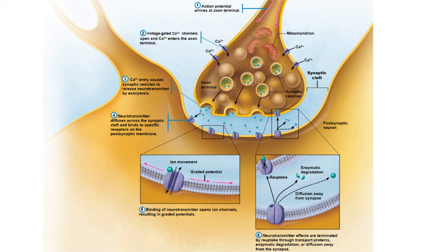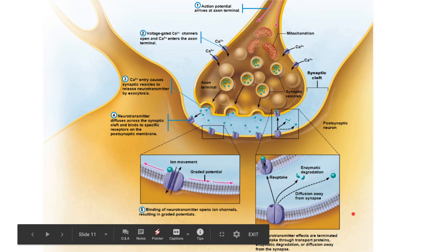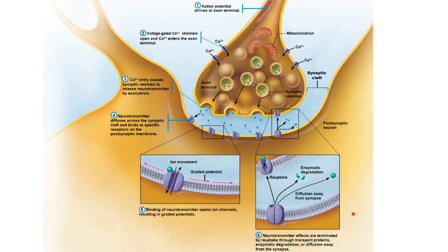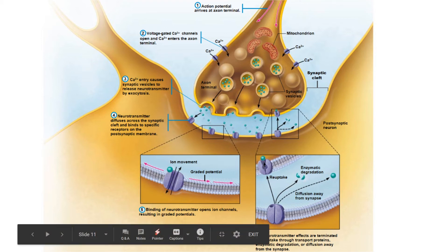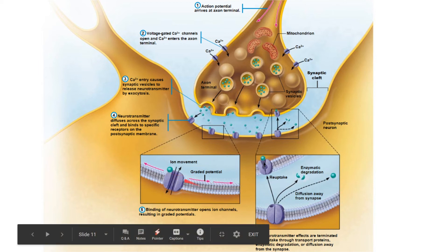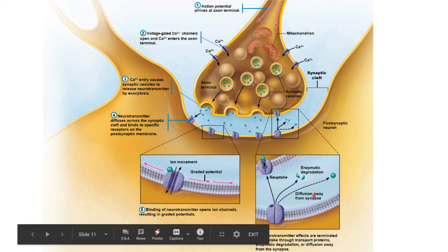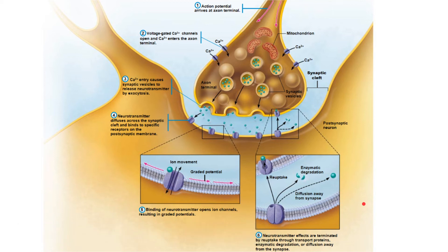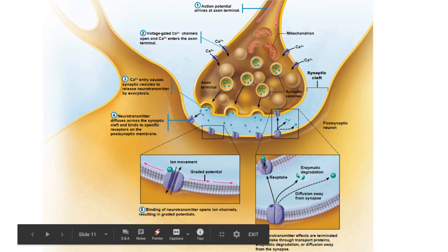Here's a picture of it all together. A lot of drugs work by interfering with this neurotransmitter removal step. For example, Prozac is a serotonin reuptake inhibitor — it binds to the reuptake protein and prevents serotonin from being taken back in, so serotonin stays in the synapse and keeps causing graded potentials, producing a mood-lifting effect. Similarly, alcohol, caffeine, heroin, and other drugs interact by either stopping neurotransmitters from being released or keeping them from being taken back up.